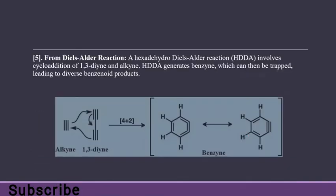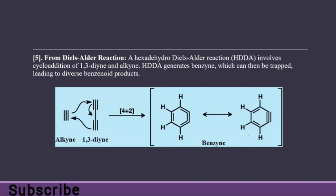From the hexadehydro-Diels-Alder (HDDA) reaction: this involves cycloaddition of a 1,2-diene and alkyne. HDDA generates benzyne, which can be trapped, leading to diverse benzoid products. As in Diels-Alder reactions, there is simultaneous bond formation and breakage. One bond breaks while a new bond forms at the same position, and then another bond breaks while another new bond forms, giving two resonance structures of benzyne.